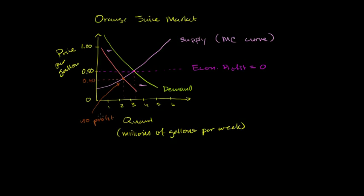Over time, when prices are this low, firms will use up their existing equipment and let labor contracts expire without renewing them — there's no incentive to reinvest. As those costs expire, they simply shut down the business. As firms exit, quantity produced in the market falls and price rises. We move along the new demand curve until price returns to 50 cents per gallon, where firms are once again neutral. That is the new long-run equilibrium price and quantity.